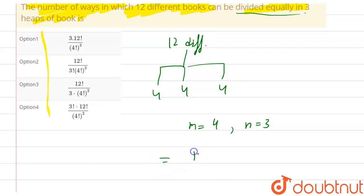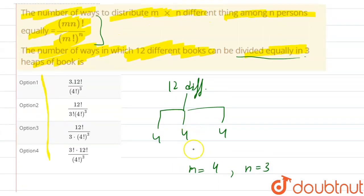Now there is one more thing. We have to divide equally in three heaps of books, and it is among n persons equally.